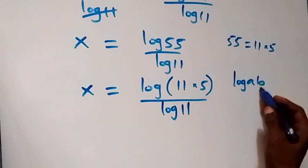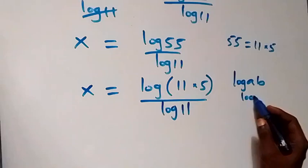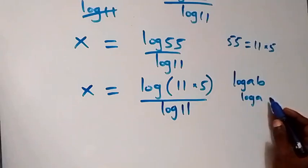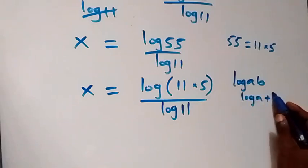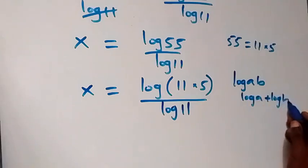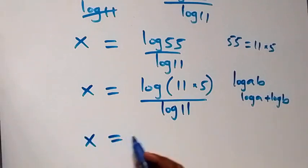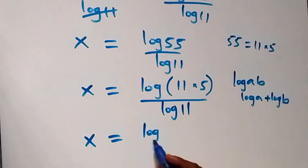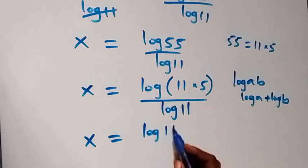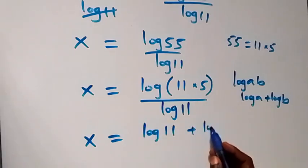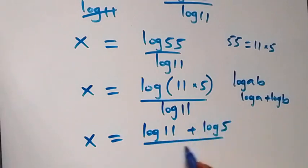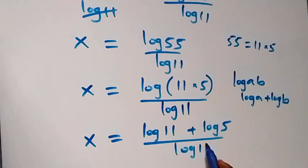...which can be written as log a plus log b. Then from here we have x equals to log 11 plus log 5, all over log 11.